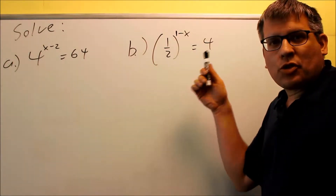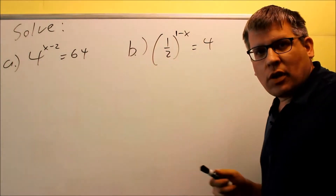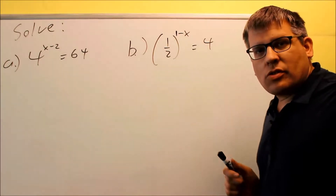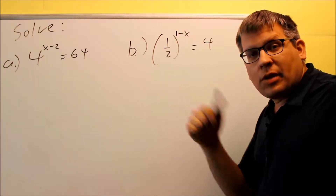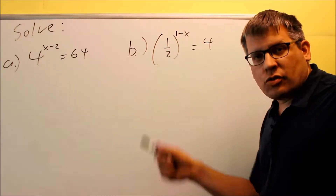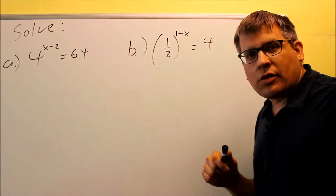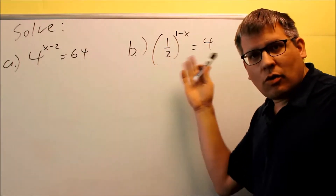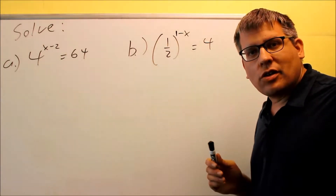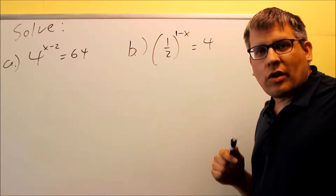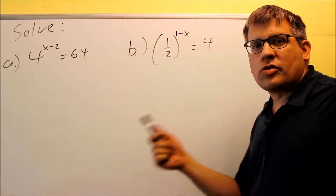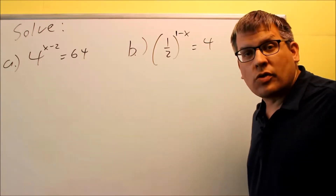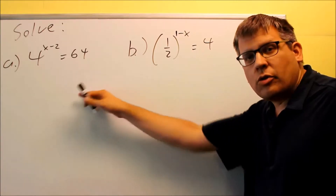We're going to solve these problems using the equal basis property. I talked about that in the previous video along with the laws of exponents. The equal basis property basically says that if you have two numbers that have the same base, then you're allowed to set the two exponents equal.